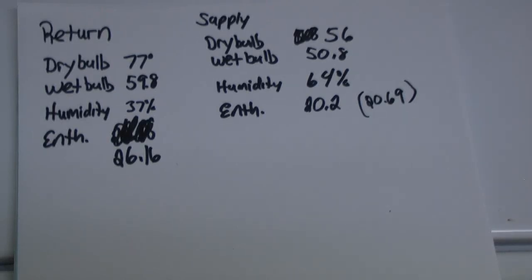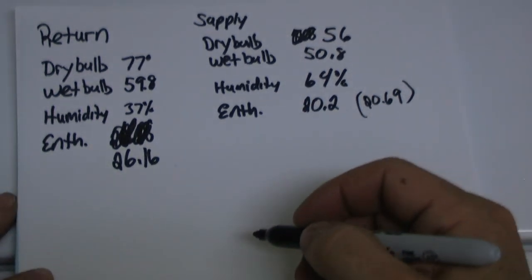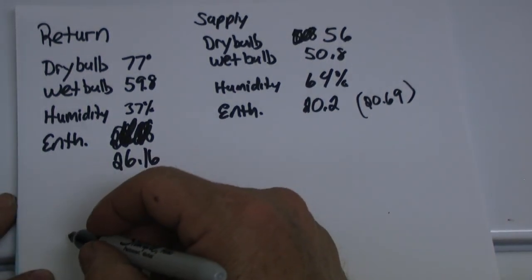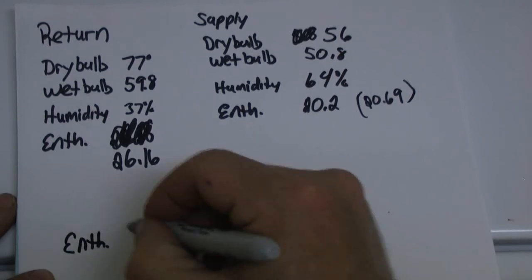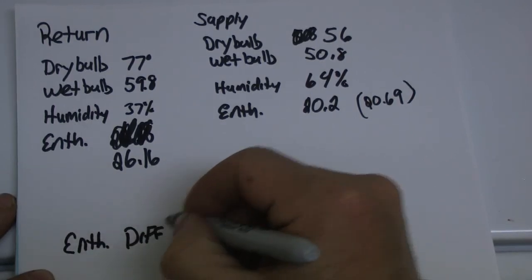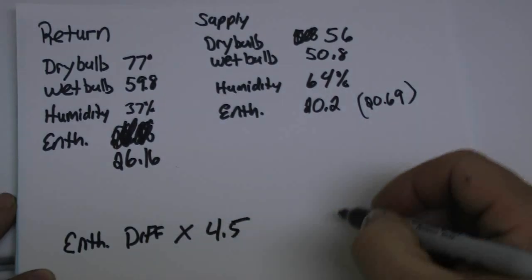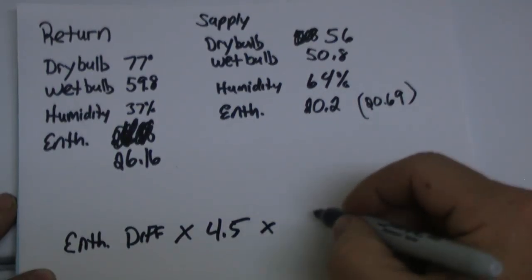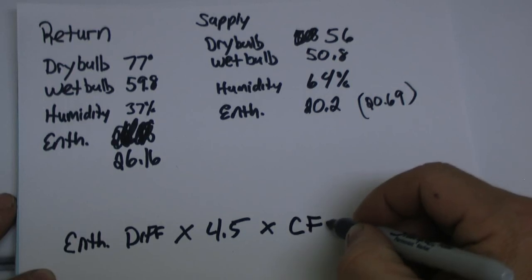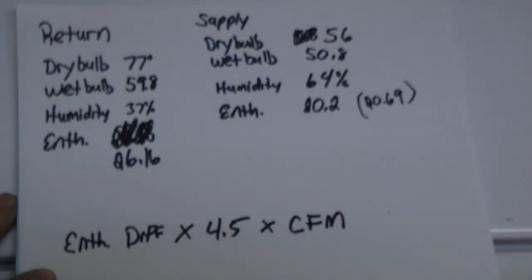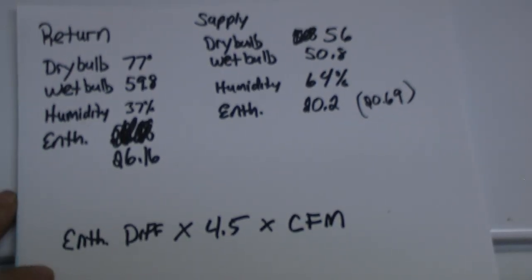Here's our different readings that we've taken. Basically to figure your BTU, it is your enthalpy difference times 4.5 times CFM. That's all there is to it.